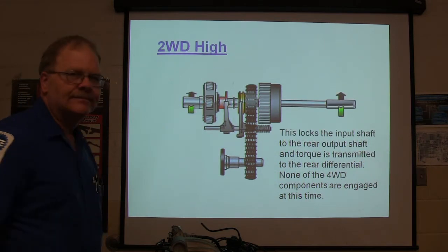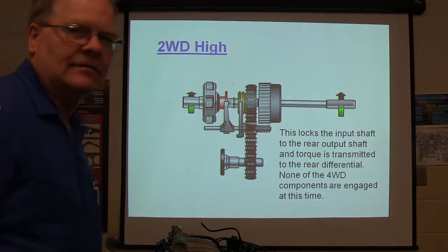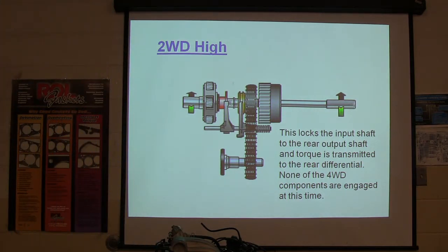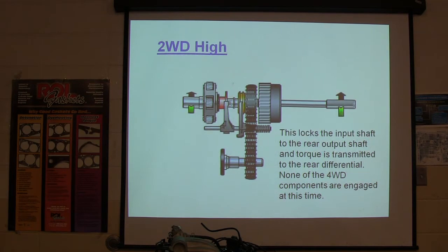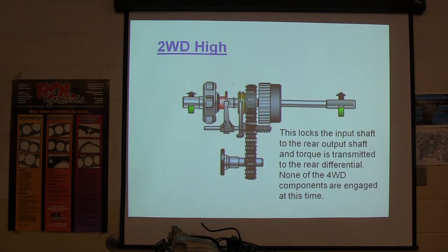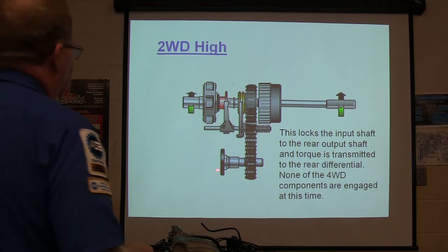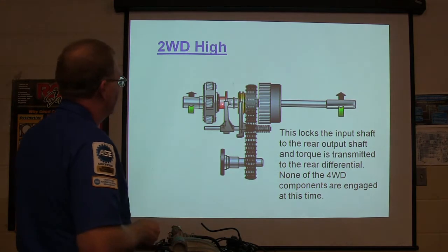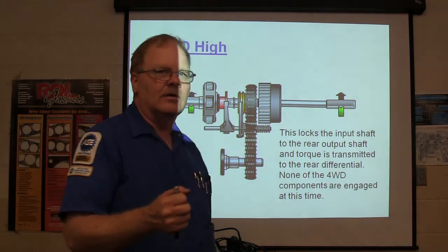When it's in two-wheel high, the reduction hub slides forward and engages its internal splines with the external splines at the end of the input shaft. That's two-wheel drive high — this goes to your rear and this one goes to your front.